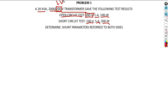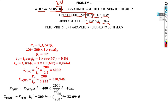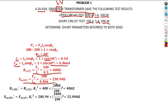Starting the calculation: first apply the power formula to find the no-load power factor angle. Then calculate the core current Ic as I0 times cosine of that angle. Then calculate Im and apply Ohm's law to determine Rc and Xm. We must also reference these values to both sides as discussed in the previous video.